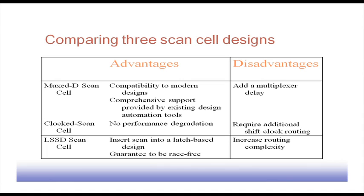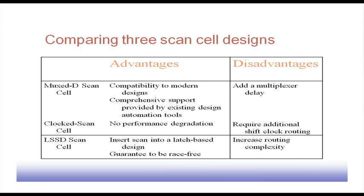However, the disadvantage of the clocked scan cell is that it requires additional shift clock routing. Since we have two clocks in the clocked scan cell, both clocks must be distributed throughout the chip wherever the scan flip-flops are. Clock routing is one of the most important problems in VLSI design because clock skew and power consumption play major roles in deciding how the clock should be distributed. Adding another clock further increases this complexity.